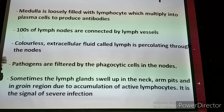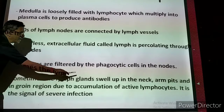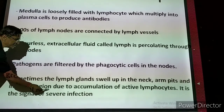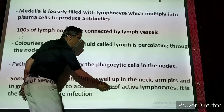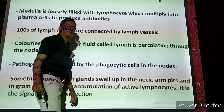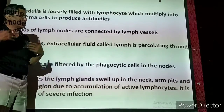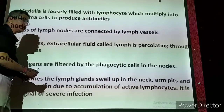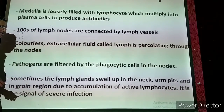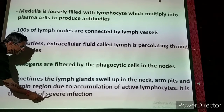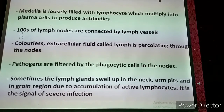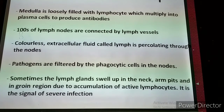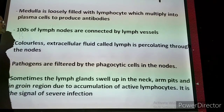When the infection is severe, the glands become very active and swell. This swelling is due to the accumulation of active lymphocytes — B cells, T cells — which are enormously produced. Swollen glands in the neck or armpits are therefore a signal of severe infection.